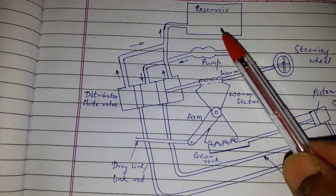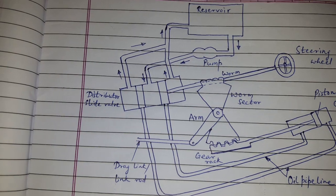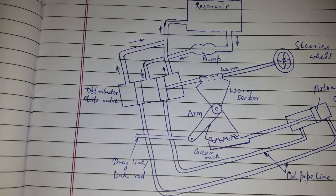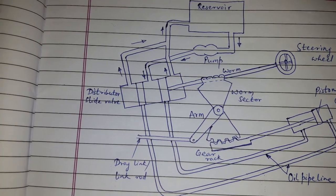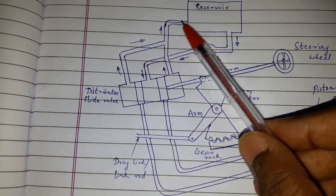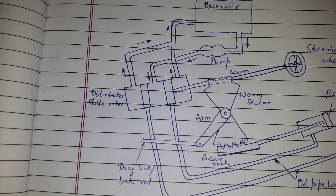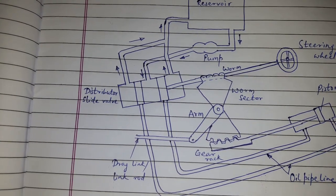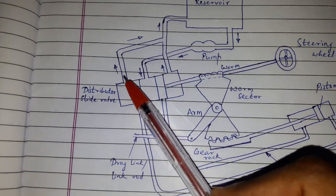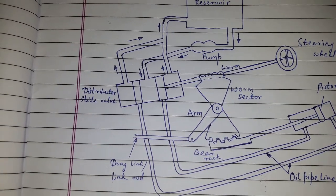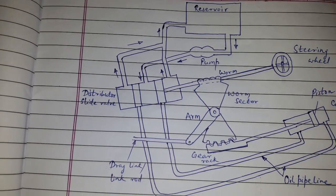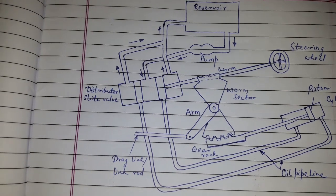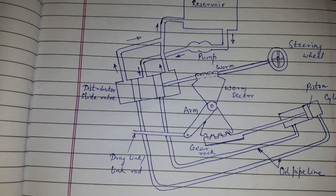Regarding the reservoir, it keeps sufficient oil in the system. The pump delivers oil under pressure in the central port of the distributor slide valve, and it is returned to the reservoir as shown when the vehicle is running straight. When the vehicle takes a turn, the return oil line is closed and the oil is sent to the booster cylinder. So this was regarding the construction and working of hydraulic power steering.